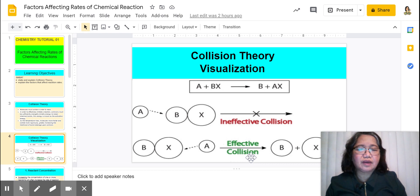Okay, like this one right here at the bottom part, wherein you have A plus BX, they will give you B plus AX. Because with this one, A doesn't collide with X, so therefore it will not be forming AX, so the collision is not effective.